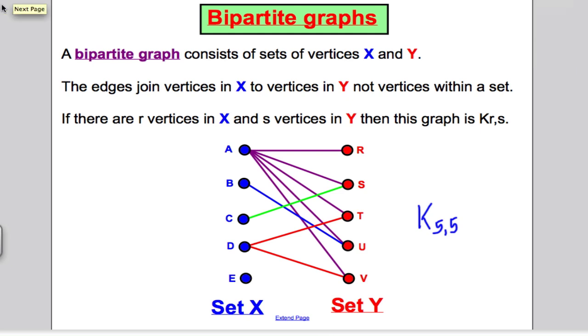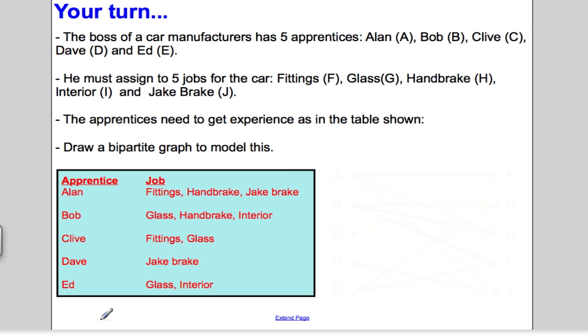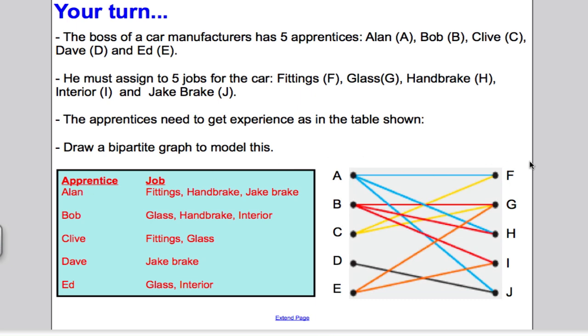I would like you to have a go at a question yourself. Pause the video and try and model the following situation by drawing a bipartite graph, just as I've shown you in this example. Hopefully you should have been able to draw a bipartite graph. Here's what mine looked like. Alan could do fittings, handbrake, or drakebrake. Bob could do glass, handbrake, or interior. Clive could do fittings or glass. Dave could just do drakebrake. And Ed could do glass or interior. A nice, easy example for you to do there.